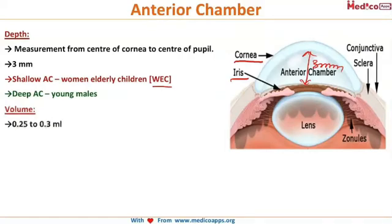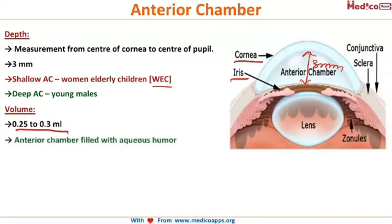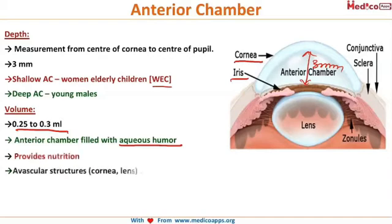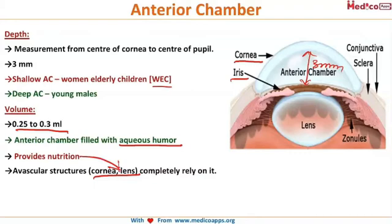The volume of the anterior chamber is 0.25 to 0.3 ml, and it is filled with aqueous humor. The function of aqueous humor is to provide nutrition to the avascular structures of the eye — that is the cornea and the lens.